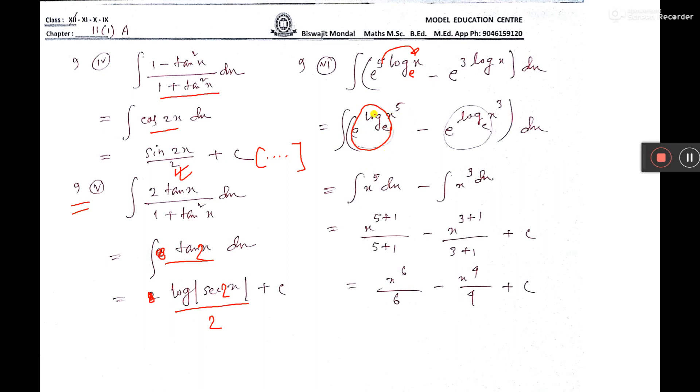If you write e to the power log x base e, the answer is x only. Here, n plus of x is x to the power 5, so I have written x to the power 5. Same thing happened for this term also. This 3 has gone above. Here, this is cancelled so only x cube.